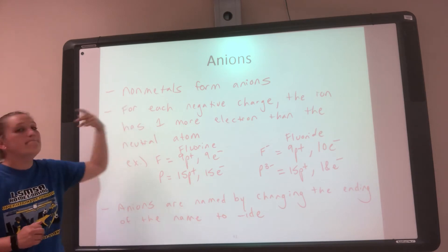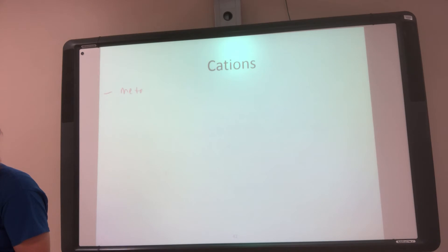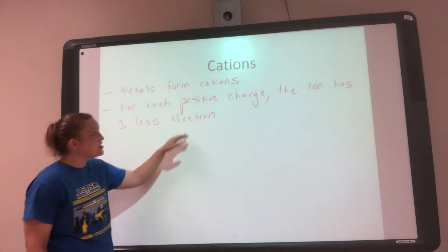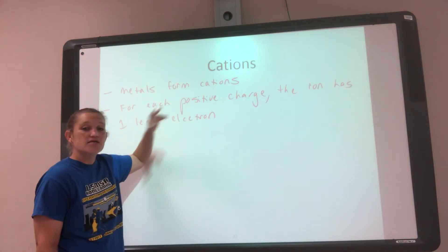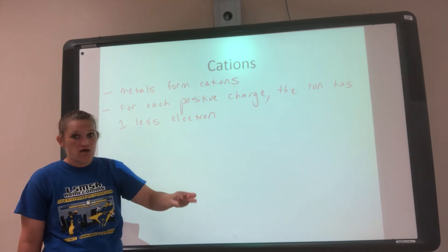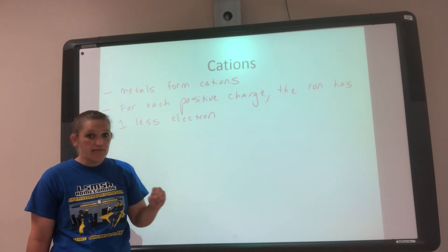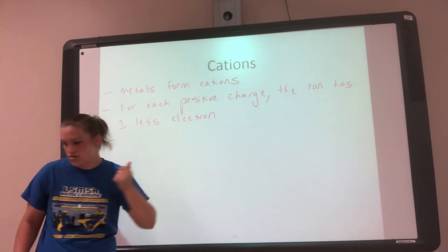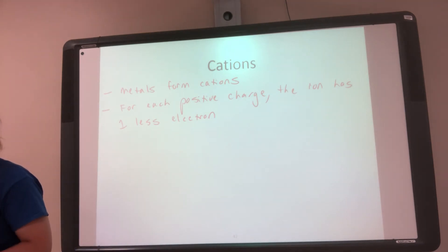If non-metals like to be anions, then metals are going to be cations. Metals form cations — kind of think of the opposite. For each positive charge, the ion has one less electron. We cannot add protons to make it more positive, because adding protons changes the element. The number of protons determines the element, so the only thing I can change is electrons. Since electrons are negative, to become more positive I have to lose electrons — so for each positive charge the ion has one less electron than the neutral atom.